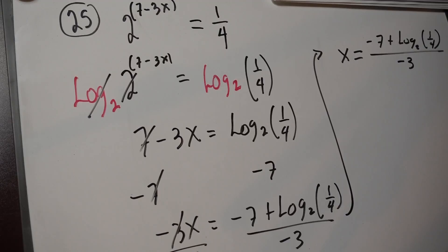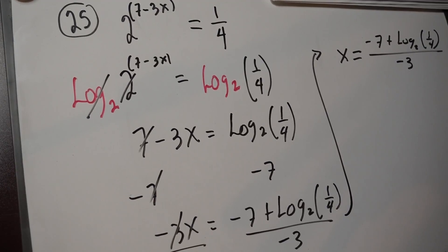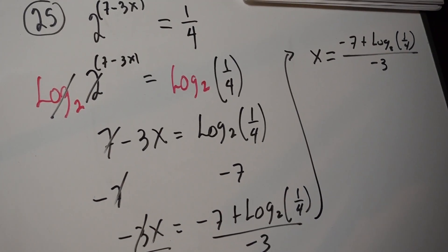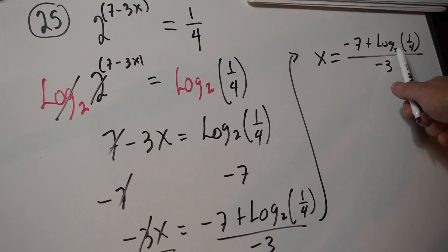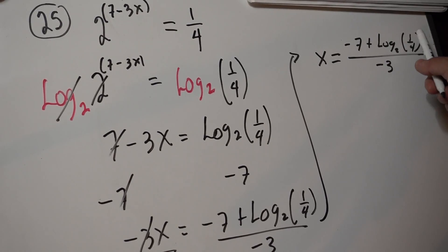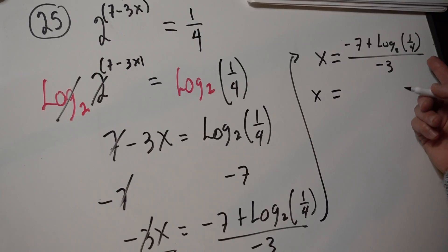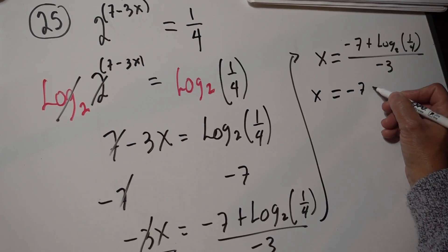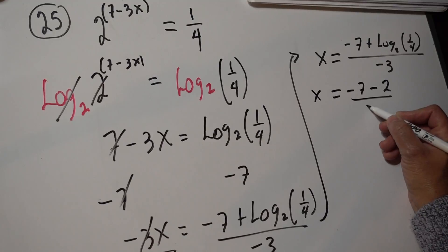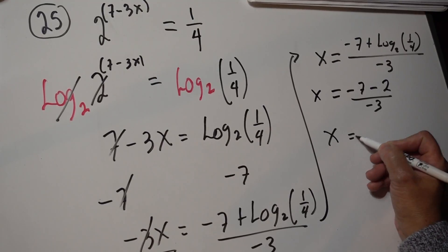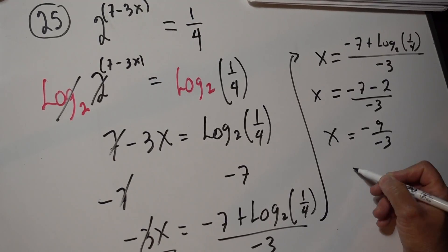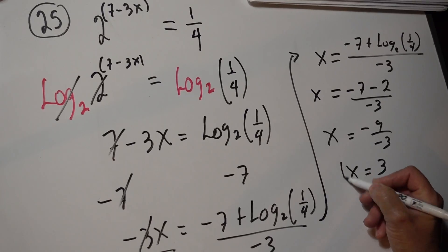You can use the calculator for this. However, it's important for you to realize that this value right here is negative 2, because 2 to what exponent is going to give me one fourth? Negative 2. So use a calculator or do it by hand, it's up to you. This is negative 2 over negative 3, so x is negative 9 over negative 3. So x is 3.